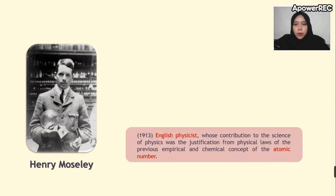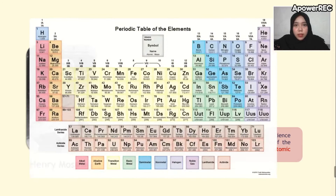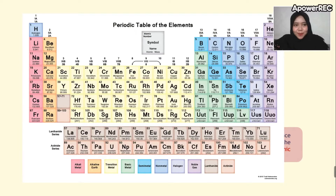The last scientist was Henry Moseley, an English physicist, in 1913. His contribution was the justification of the atomic number concept from physical laws. He found that the reason elements are arranged in the periodic table is not because of atomic mass, but because of the atomic number, which is related to experiments with X-rays. And here is the modern periodic table which everyone uses nowadays.